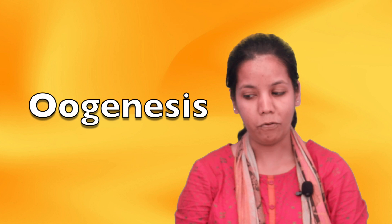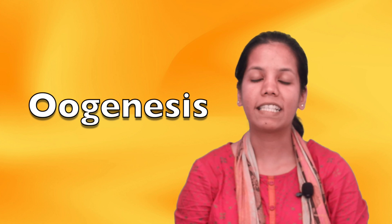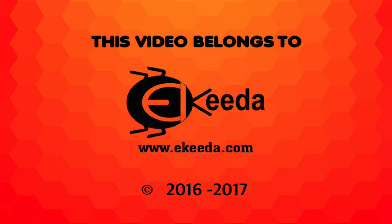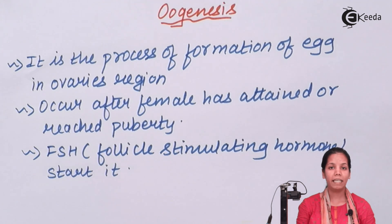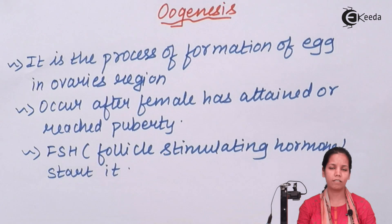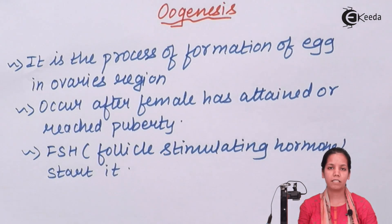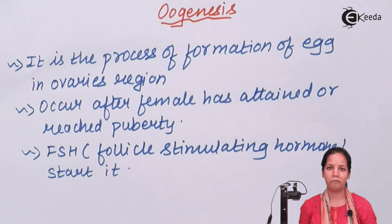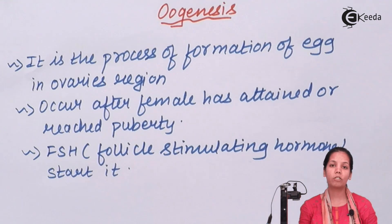Oogenesis is the process of formation of an egg which is haploid. Once a female is completely matured and has attained puberty, approximately at 18 years, and once the menstrual cycle has started, oogenesis begins — the formation of the egg which will fertilize with the sperm.